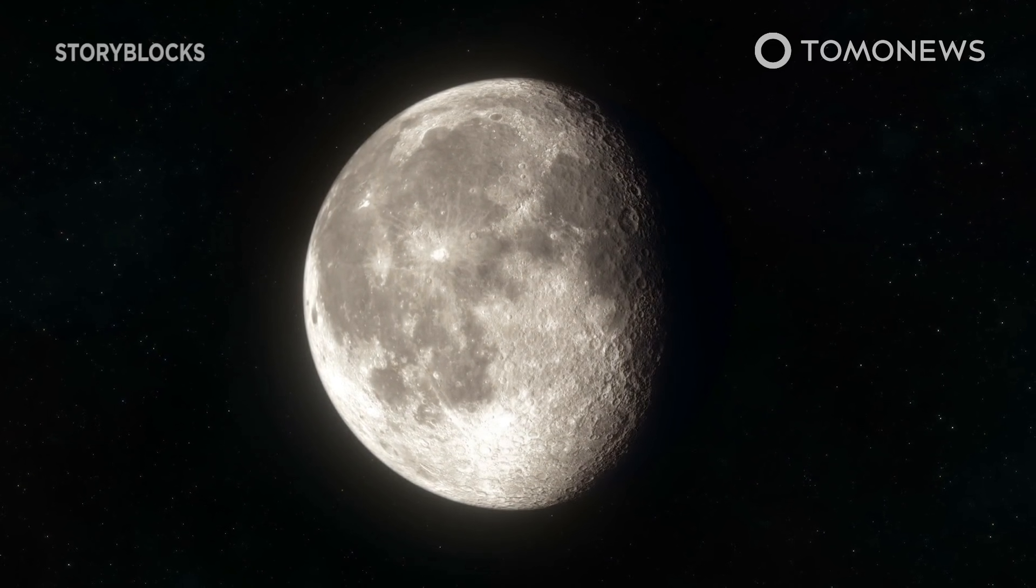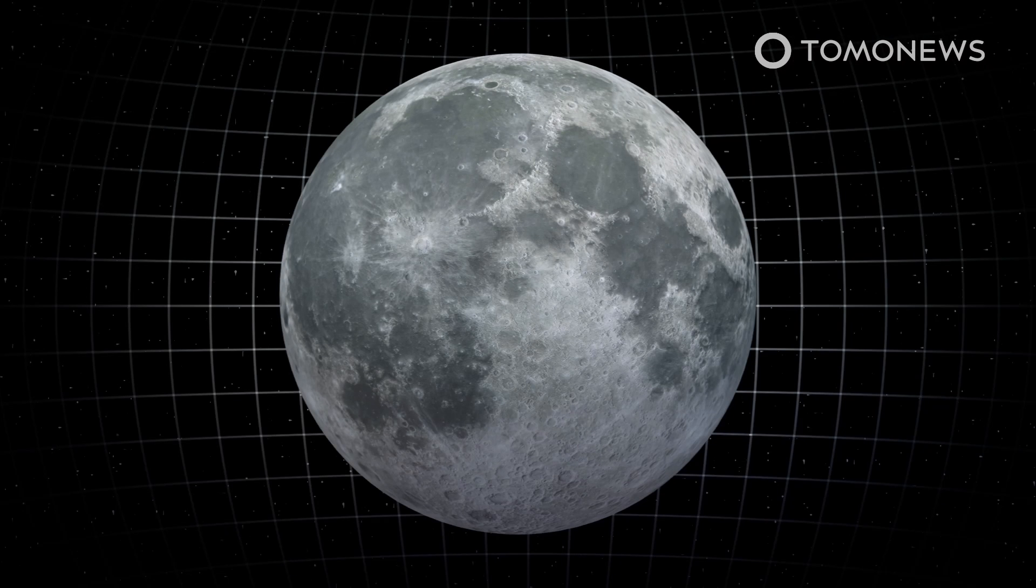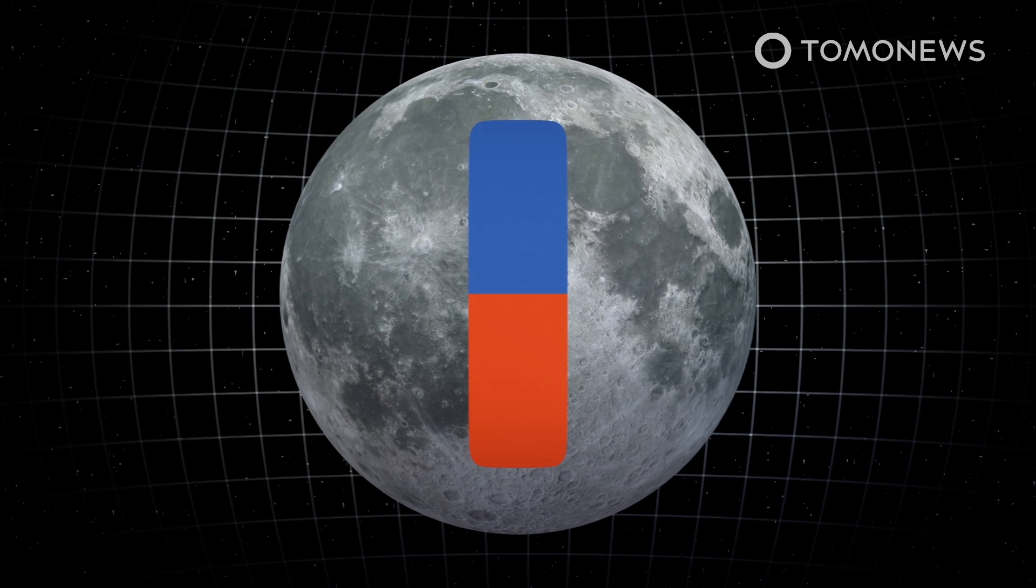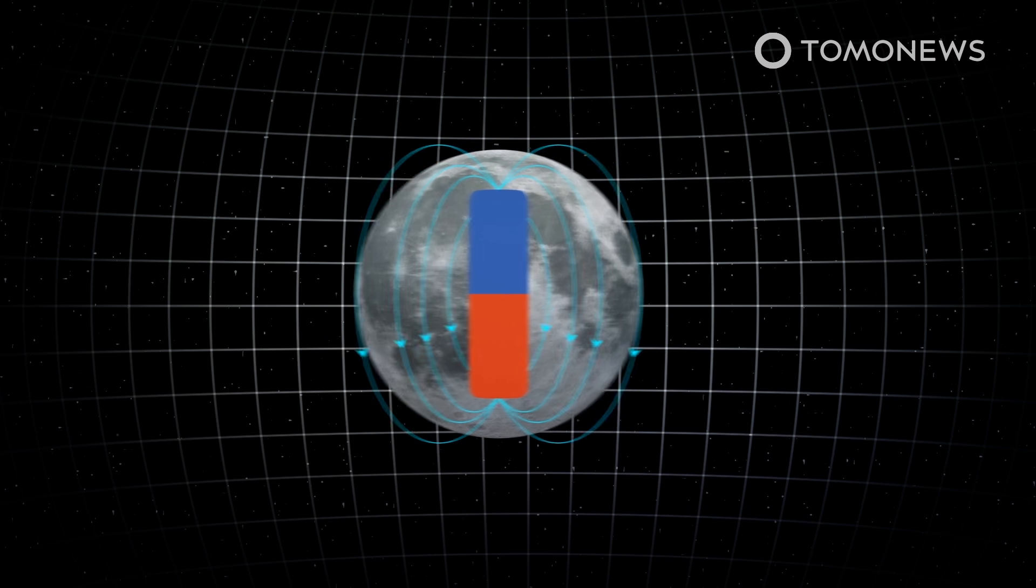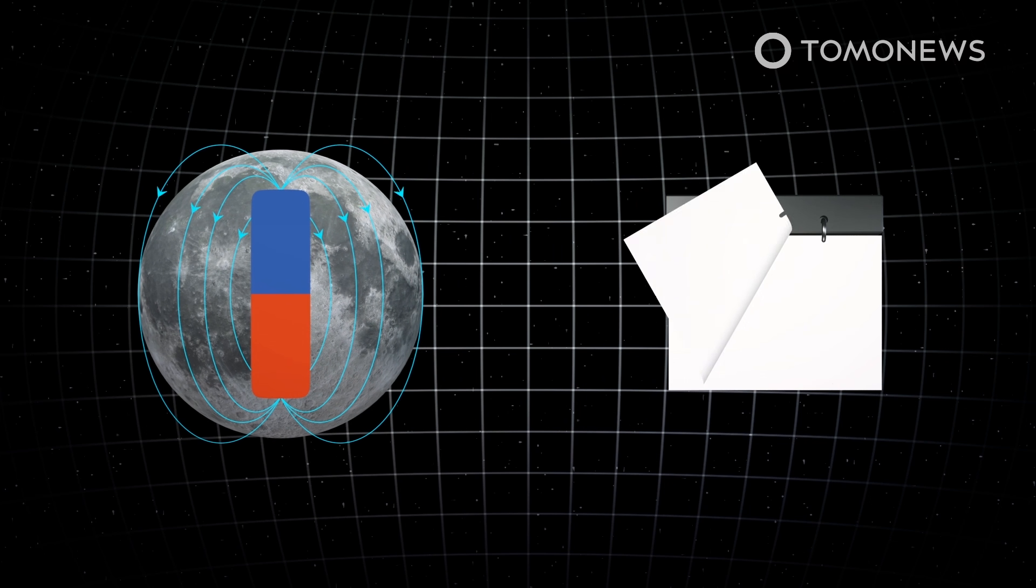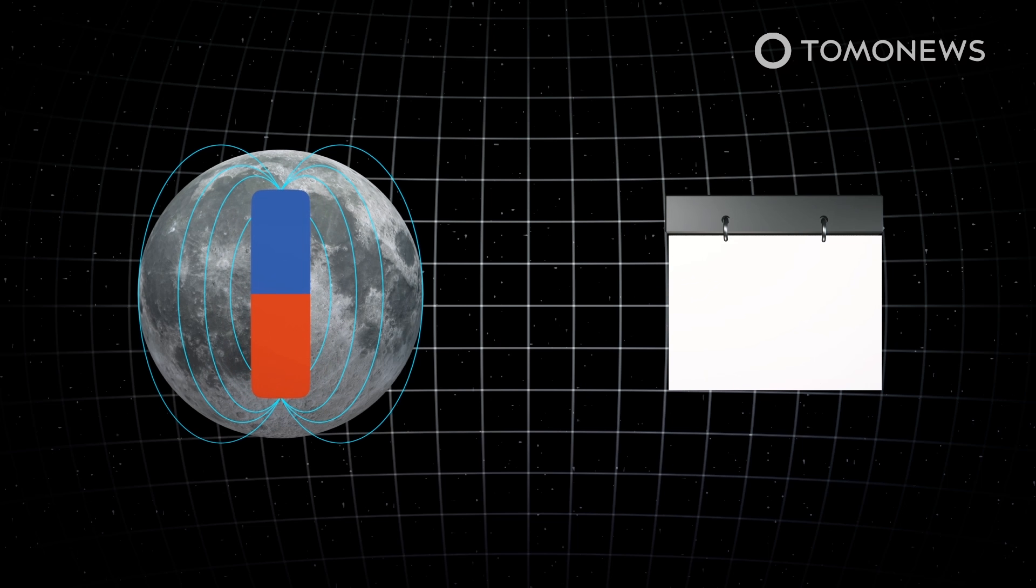Scientists found new clues about when the moon's internal dynamo stopped generating the lunar magnetic field. Billions of years ago, the ancient moon had a powerful dynamo at its core that produced a strong global magnetic field. Scientists at the Massachusetts Institute of Technology say that they have pinned down when that dynamo stopped, leading to the field's dissipation.